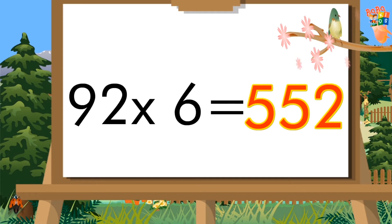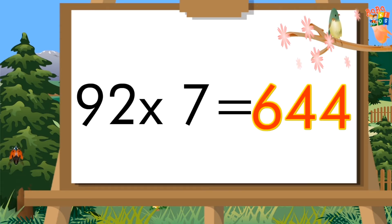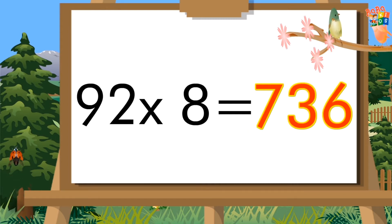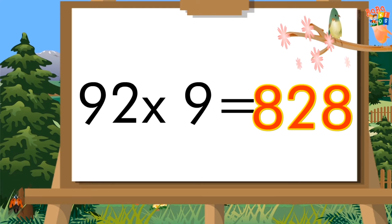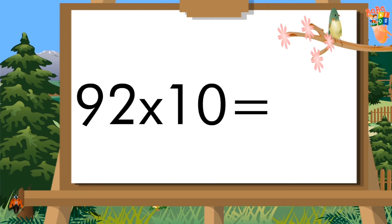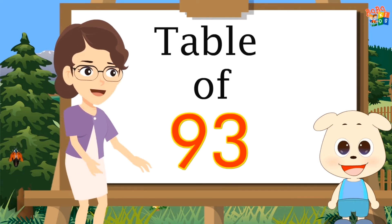Ninety-two sixes are five hundred fifty-two. Ninety-two sevens are six hundred forty-four. Ninety-two eights are seven hundred thirty-six. Ninety-two nines are eight hundred twenty-eight. Ninety-two tens are nine hundred twenty. Table of 93.